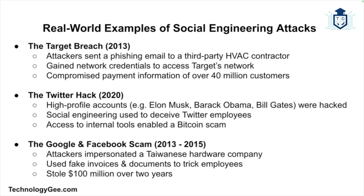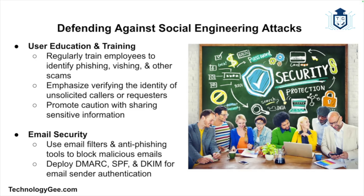Here are some real-world examples. The Target breach in 2013 was one of the largest data breaches in history — it began with a phishing email sent to a third-party HVAC contractor. The attackers gained network credentials and infiltrated Target's network, compromising payment information of over 40 million customers. In July 2020, high-profile Twitter accounts including those of Elon Musk, Barack Obama, and Bill Gates were hacked in a bitcoin scam after attackers used social engineering to deceive Twitter employees and gain access to internal tools. From 2013 to 2015, attackers impersonated a Taiwanese hardware company and tricked Google and Facebook employees into wiring them $100 million using fake invoices and documents.